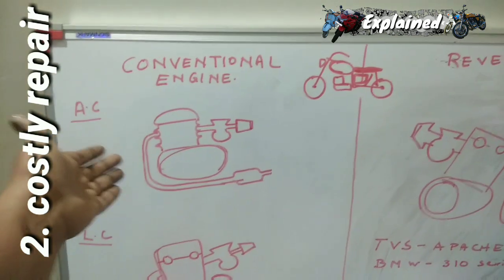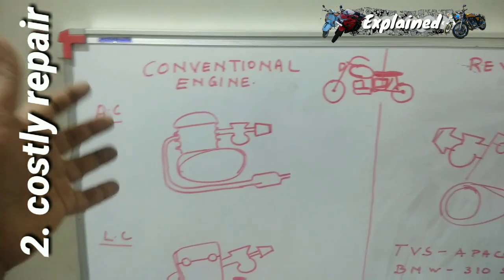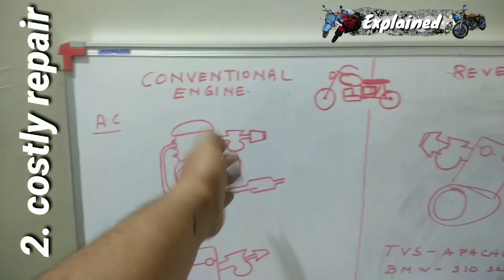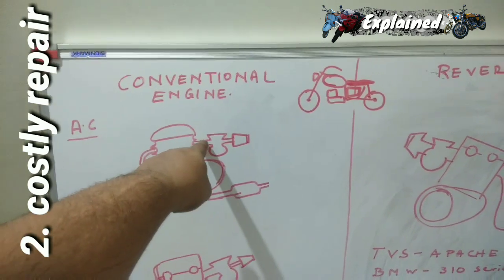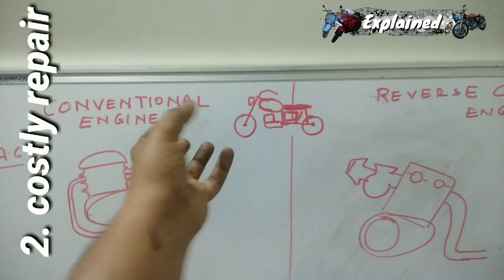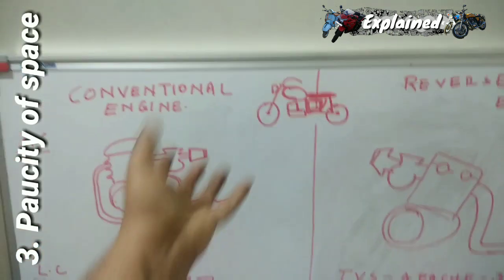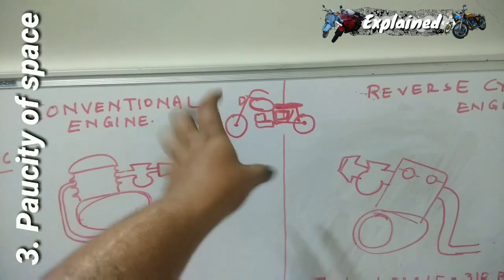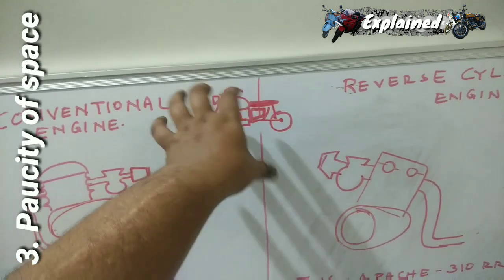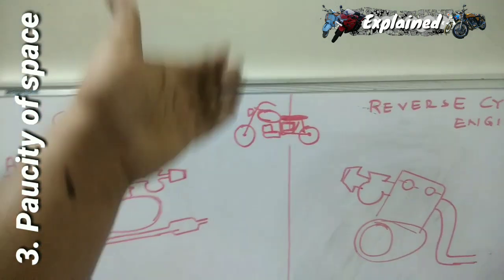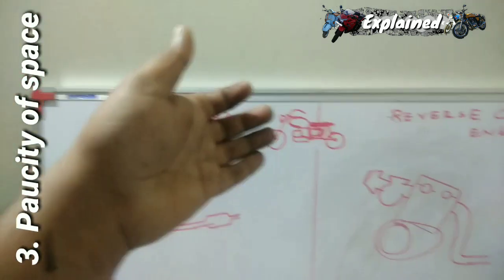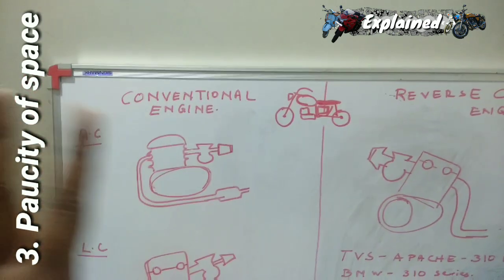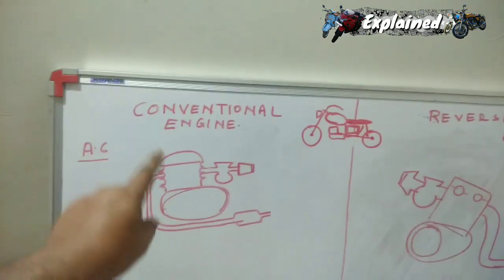If the carburetor were placed at the front, the repair would involve skilled labor and entire replacement of the inlet manifold — a costly repair. Also, there isn't enough space to fit the air filter box, carburetor, and other components in the conventional front area. Arrangements would need to be made to place them below the fuel tank, which in turn would reduce the amount of petrol you can store, affecting the bike's range.